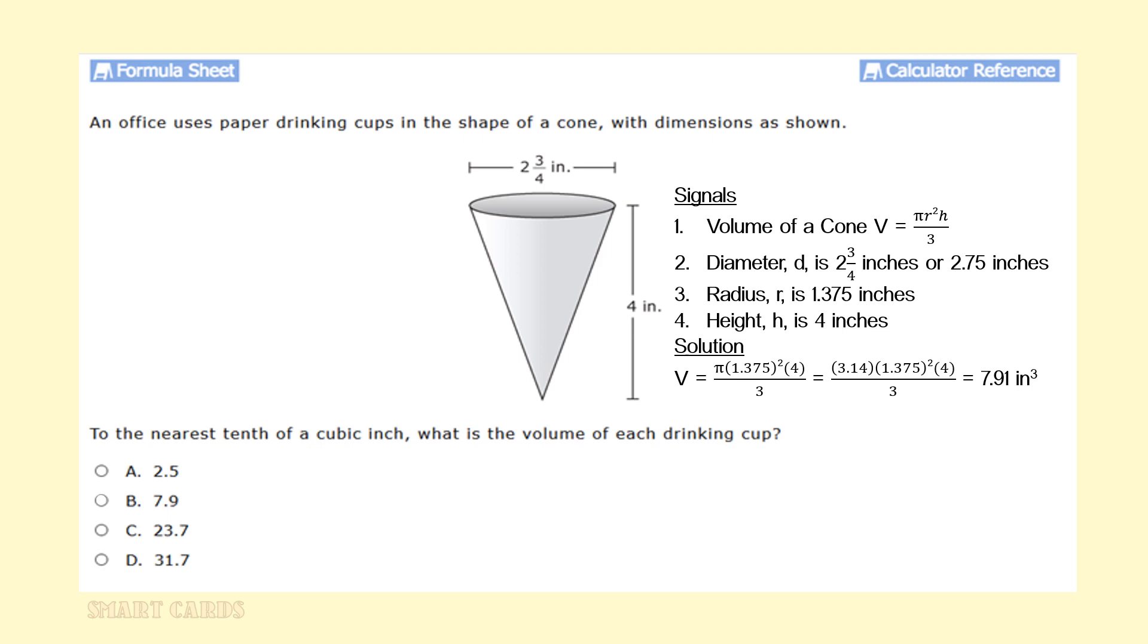Let's look at the solution. We're going to take the volume formula and we're going to replace the radius with 1.375. We're going to replace the height, h, with four inches. And we're going to replace pi with 3.14. Before we multiply everything together, we're going to take 1.375 and square it. Then we're going to multiply it by 3.14. Then we're going to multiply it by four. Then we're going to divide it by three. And we're going to get 7.91 inches cubed or answer option b.